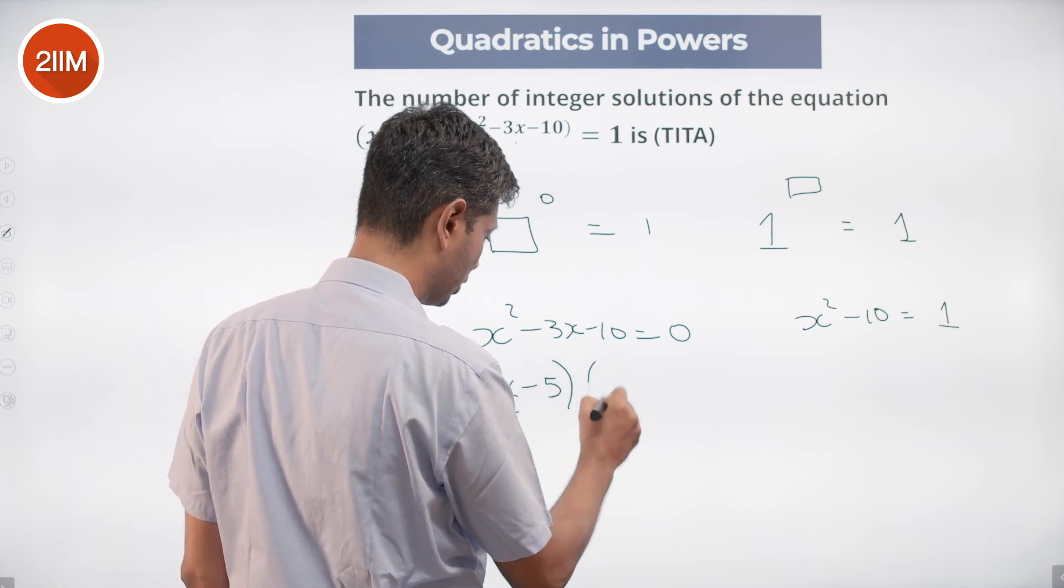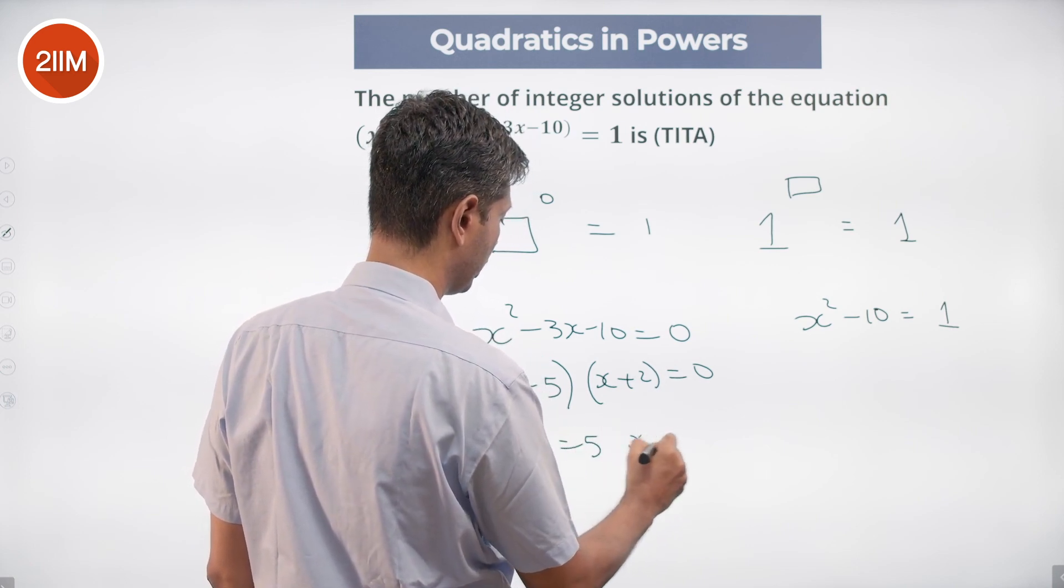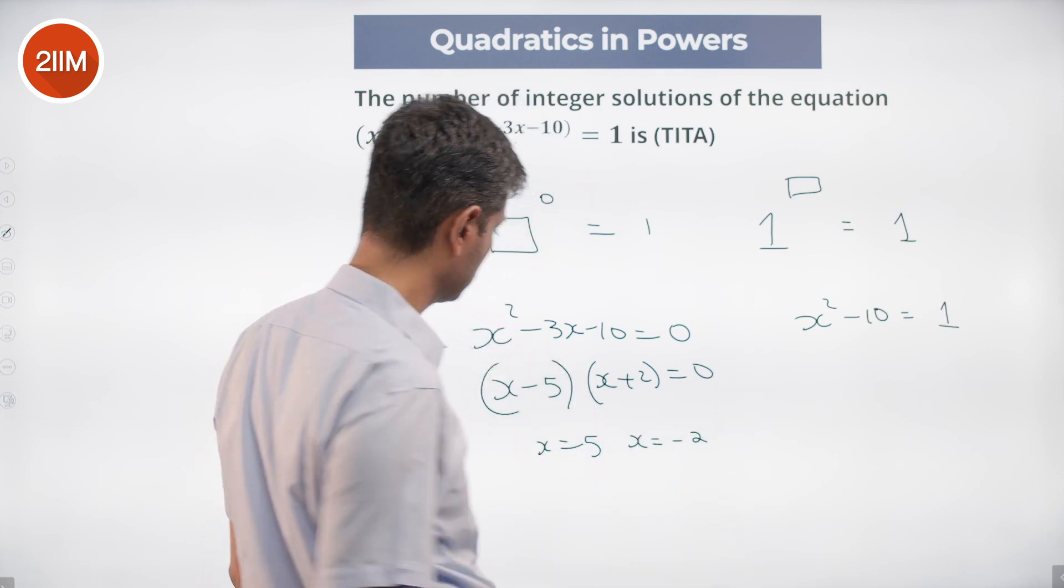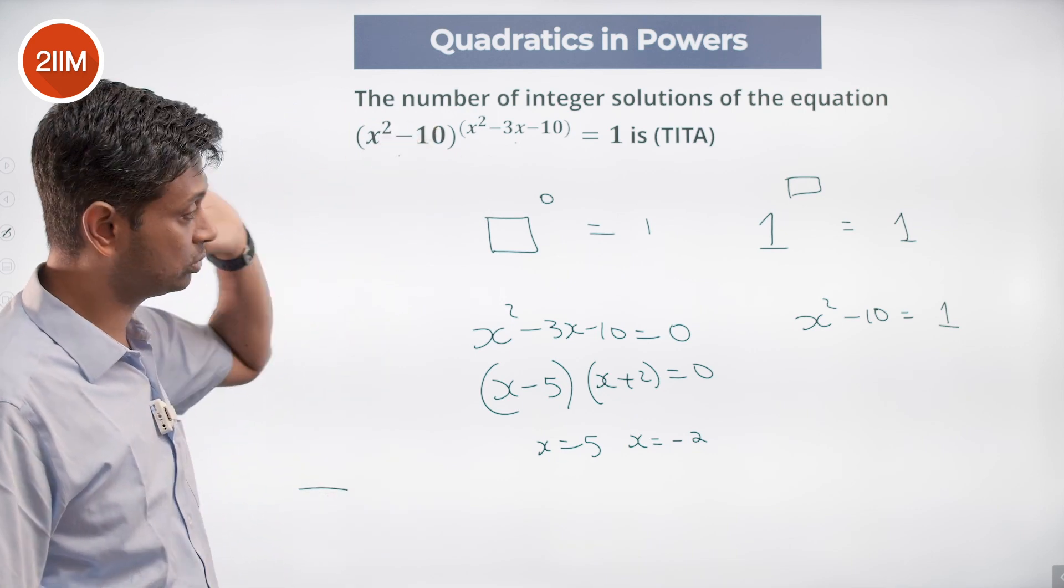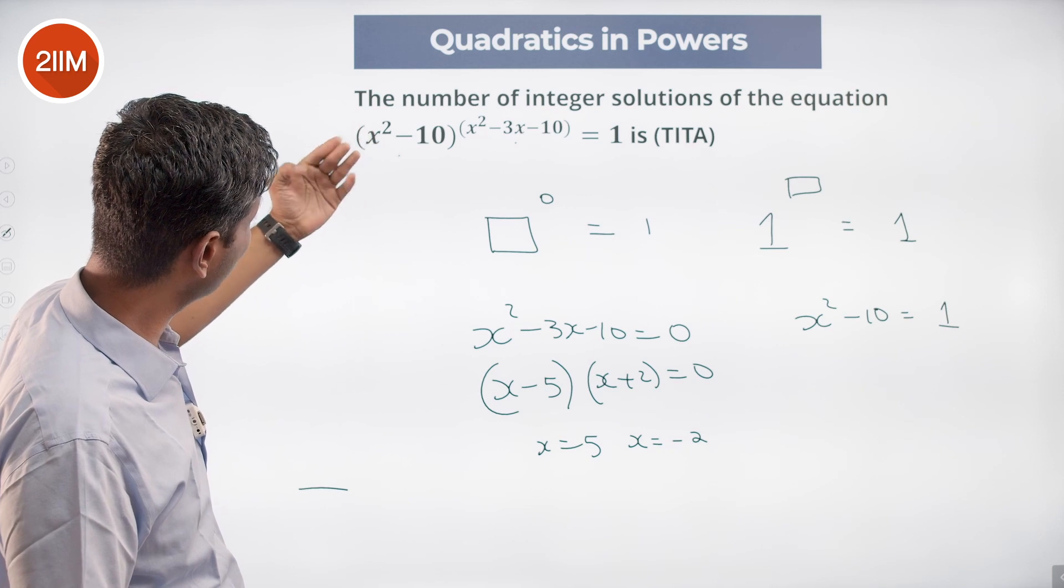x is 5 or x is -2. If x is 5, then 5² - 10 to the power 0, that will be 1. If x is -2, then (-2)² which is 4, minus 10 is -6. -6 to the power 0 is 1.